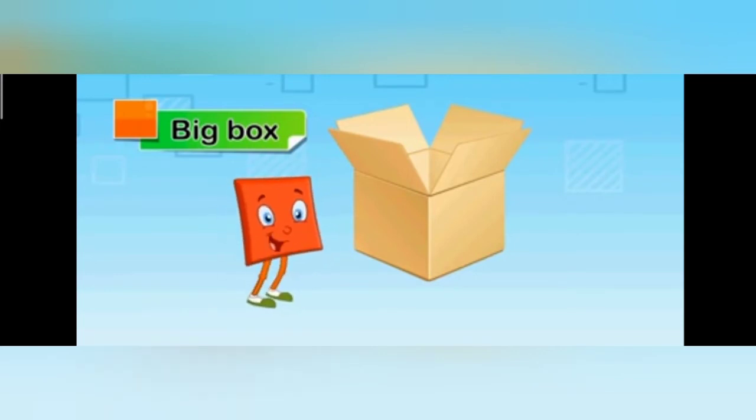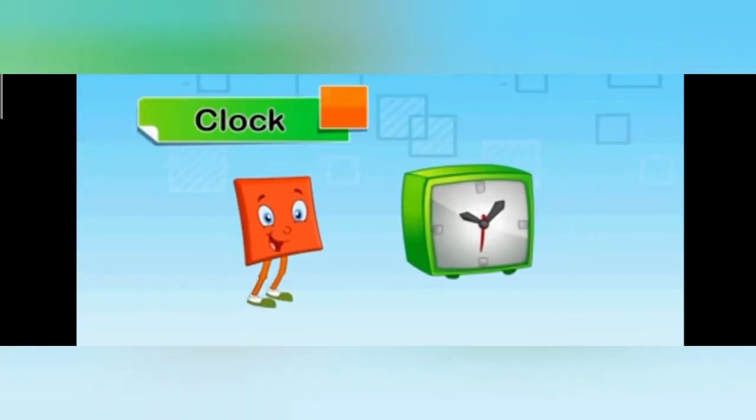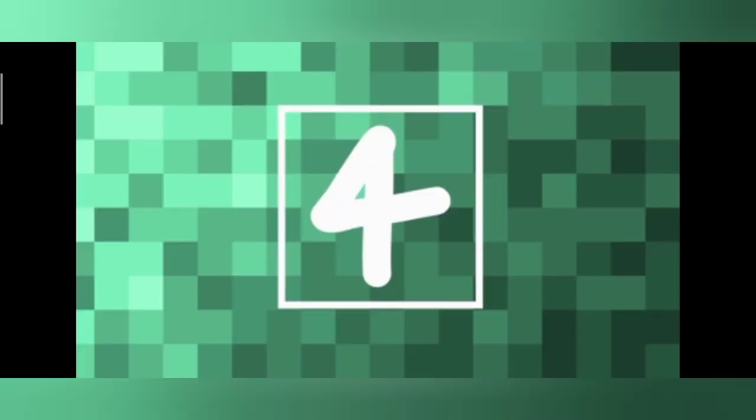This is a big box. The face of this big box is square. Good, you have understood the concept so well. Now what is it? Oh, it's a clock. Can you tell me the shape of this clock? It's square. And oh, it's also telling me to sign off. So my little children, let's see how much you have understood this concept of the shape square.